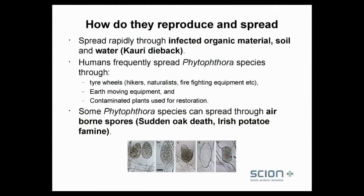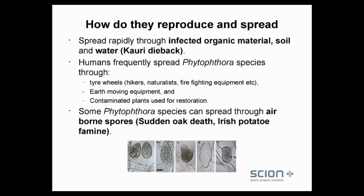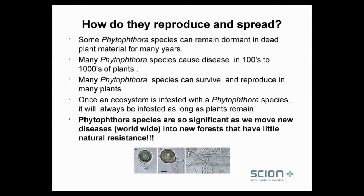How do they reproduce and spread? They spread rapidly through infected organic material — that's why they can move so quickly — but they also move autonomously on their own. Humans have a huge impact on the spread of these phytophthora species. We have clear evidence around the world that they're spread through tyres. Hikers, naturalists, and people who love the environment are inadvertently spreading these phytophthora species. Earth-moving equipment is a huge culprit. Some phytophthora species can spread on the air, like sudden oak death. Some can remain dormant for many years, affect hundreds if not thousands of hosts, and once an ecosystem is infected, it's always infected.